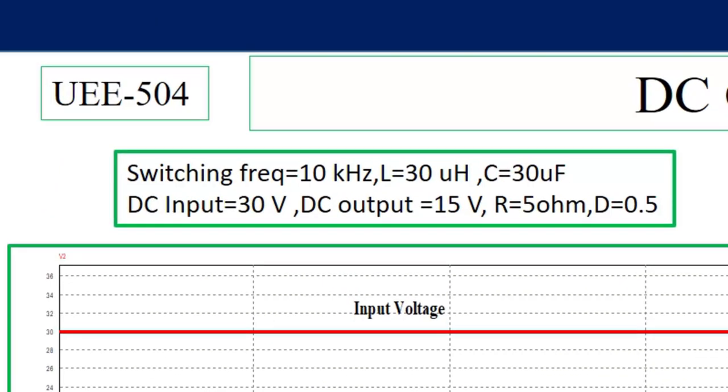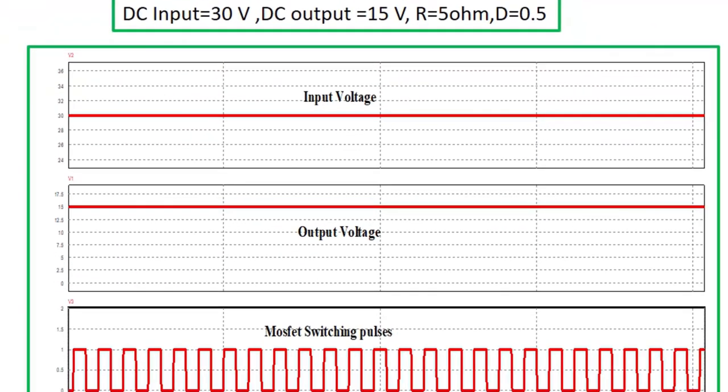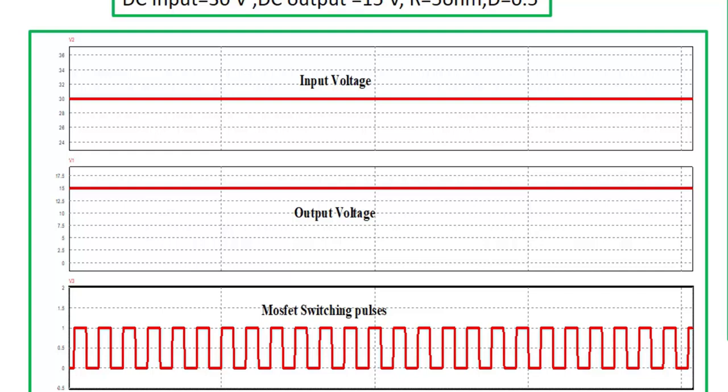Switching frequency of MOSFET is 10 kHz, inductance 30 microhenry, capacitance 30 microfarad, DC input voltage is 30 V, and the output voltage is obtained 15 V at 50% duty cycle. The resistance is taken as 5 ohm. You can see in the waveform, input voltage is 30 V, output voltage is exactly 15 V. So the pulsating output voltage is now filtered and smooth output voltage is obtained, and this output voltage is in usable form, can be used for various applications.